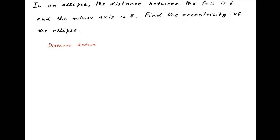We know that the distance between the foci of an ellipse is equal to 2 times Ae, where A is the semi-major axis and E is the eccentricity of the ellipse. This is given to be equal to 6. Therefore, Ae is equal to 3.